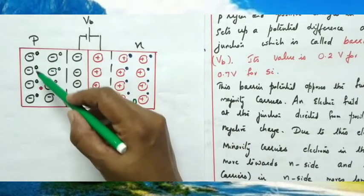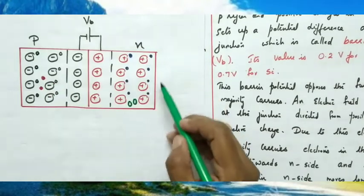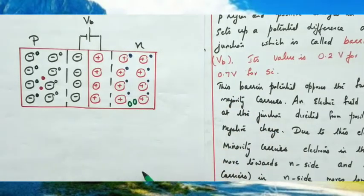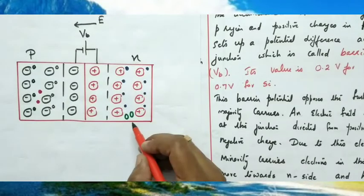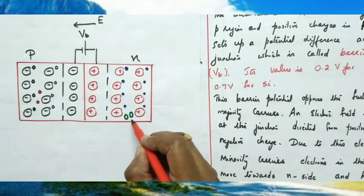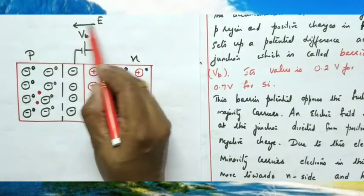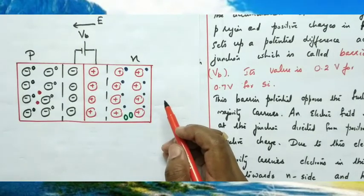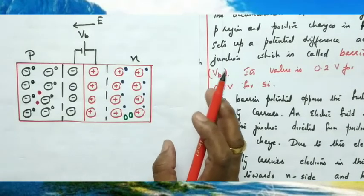In the P region, majority carriers are holes; in addition, there are minority carrier electrons (shown as red spots). In the N region, majority carriers are electrons; in addition, there are minority carrier holes. After the formation of the barrier potential and electric field, these minority carriers begin to move. Minority carrier holes in the N region move from N to P in the direction of the electric field.